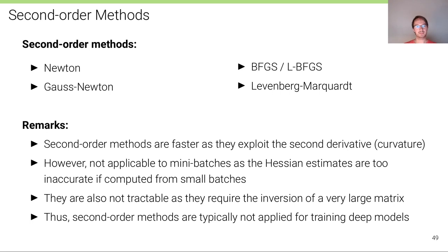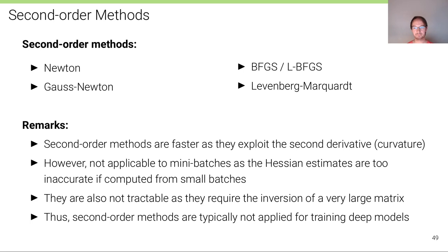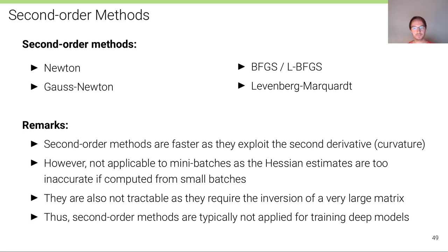In classical optimization, second-order methods compute the Hessian or an approximation (Newton, Gauss-Newton, L-BFGS, Levenberg-Marquardt). However, these are not applicable in deep learning with mini-batches because Hessian estimates are too inaccurate, and inverting a matrix of size (number of parameters)² is intractable. Therefore, second-order methods are typically not used for training deep models.